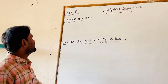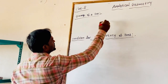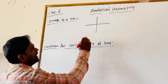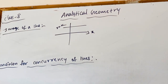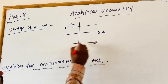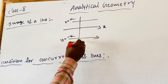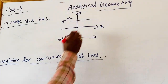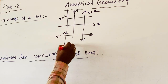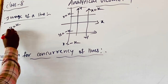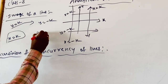In the previous class, we discussed foot of the perpendicular and image of the point. Now, image of the line with respect to the coordinate axis. A line parallel to the x-axis is y = k. The image of this line with respect to the x-axis is y = -k, which is in the opposite direction. Similarly, with respect to the y-axis, the image of a line parallel to the y-axis, x = k, will be written as x = -k.